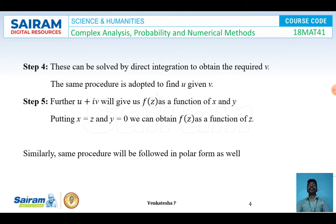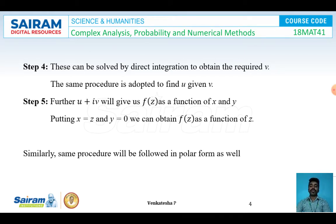Step four: this system is solved by direct integration to obtain the required v. The same procedure is adopted to find u when v is given. Step five: u + iv gives us f(z) as a function of x and y. By putting x = z and y = 0, we obtain f(z) as a function of z. The same procedure is applicable in polar form as well.